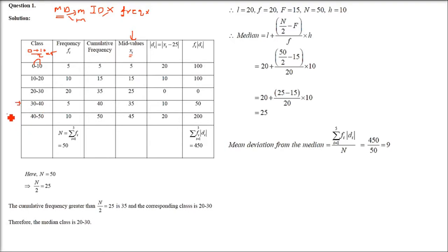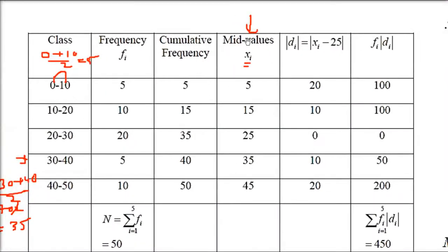For example, class 30–40: (30+40)/2 = 70/2 = 35, so 35 is the central value we use as Xi. In the case of mean we don't need to return to the class again, but for median we do have to go back to the class.